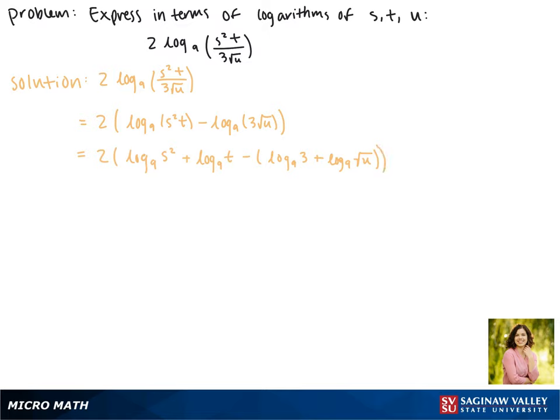Now we're going to take care of the coefficients in front of each term. We'll write our exponents as coefficients out front, and we need to remember to subtract both of these terms. So this becomes 2 times 2 times the log base 9 of s plus the log base 9 of t minus the log base 9 of 3 minus, and now this exponent of 1 half is written as a coefficient minus 1 half times the log base 9 of u.